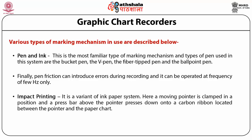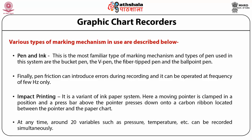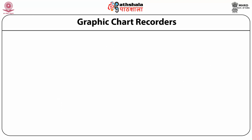In the ink paper system, a moving pointer is clamped in position and a press bar above the pointer presses down onto a carbon ribbon located between the pointer and the paper chart. The carbon markings imprinted on the chart serve as a record. Large format recorders with 0.28-meter wide strip charts use impact printing to record data, and multiple variables such as pressure, temperature, etc. can be recorded simultaneously.